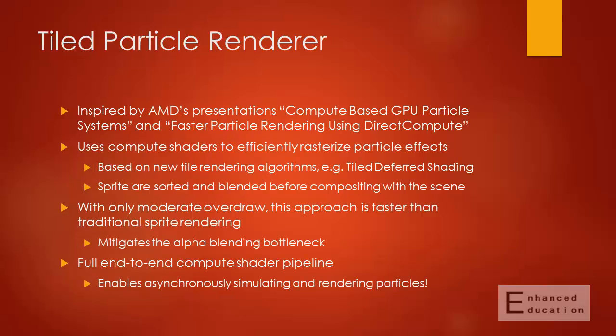With our new particle renderer, we took AMD's ideas for using a tiled renderer to more efficiently rasterize particle effects. This is all implemented with compute shaders, which is kind of a theme in MiniEngine, so it's possible to simulate and render particle effects completely on the compute queue. The idea is very similar to tiled deferred shading, and the main advantage is that you only have to alpha-blend each pixel once. It avoids the overdraw bottleneck, and can make your worst-case particle effects that much more manageable.